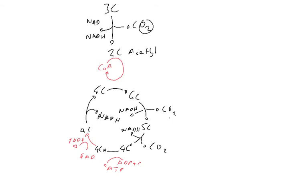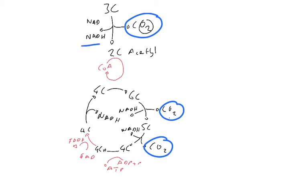What you can see is that we've broken down the three-carbon molecule and produced a carbon dioxide here, a carbon dioxide here, and a carbon dioxide here, so we've completely removed the carbons. We've produced NADs here, here, here, and here, and an FAD there. We've only produced two ATPs per glucose from this process, and this is produced directly through substrate-level phosphorylation.